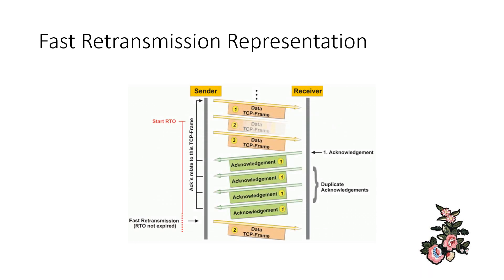In the fast retransmission diagram, the sender sends data to the receiver. The first packet is received but the second packet is not received by the receiver. The sender also sends the third packet, and the receiver sends acknowledgement one for the first packet, followed consecutively by three duplicate acknowledgements. The sender notes that the receiver has not received the second packet, so using fast retransmission, the second packet is retransmitted by the sender to the receiver.